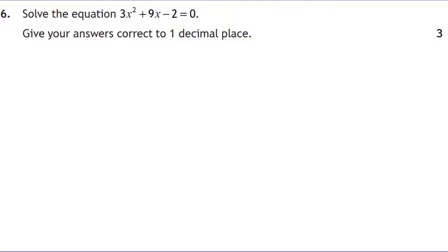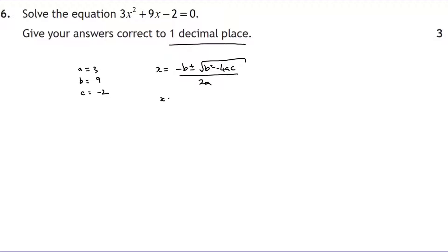Question six: solve a quadratic equation to one decimal place. The instruction to round implies we use the quadratic formula from the formula sheet. With a = 3, b = 9, c = −2, the formula gives: negative b plus or minus the square root of b² minus 4ac, all over 2a. That's −9 ± √(9² − 4×3×(−2)) all over 2×3.